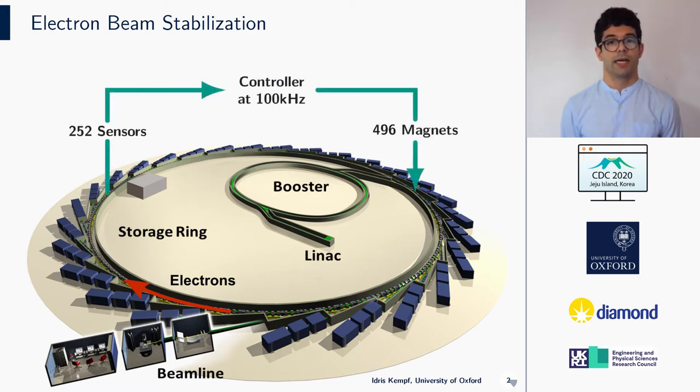That is why the so-called fast orbit feedback system is used, which controls a large number of magnets to reduce the trajectory error of the electrons down to nanometers. As a novelty, the Diamond 2 upgrade will introduce two different types of corrector magnets, slow and fast magnets, whereas for Diamond 1, all magnets had identical dynamics. Today's talk will tackle the difficulties introduced by these additional dynamics.